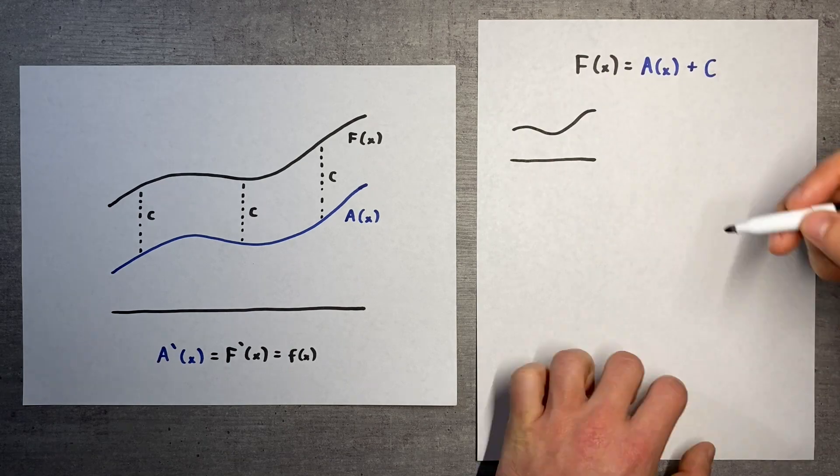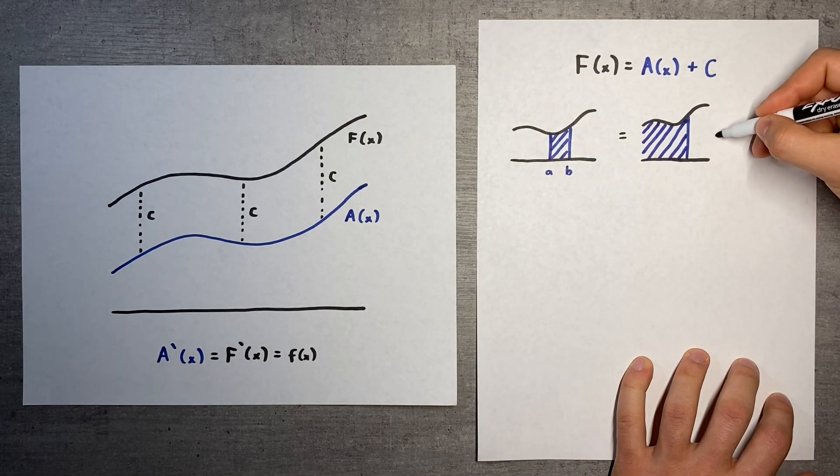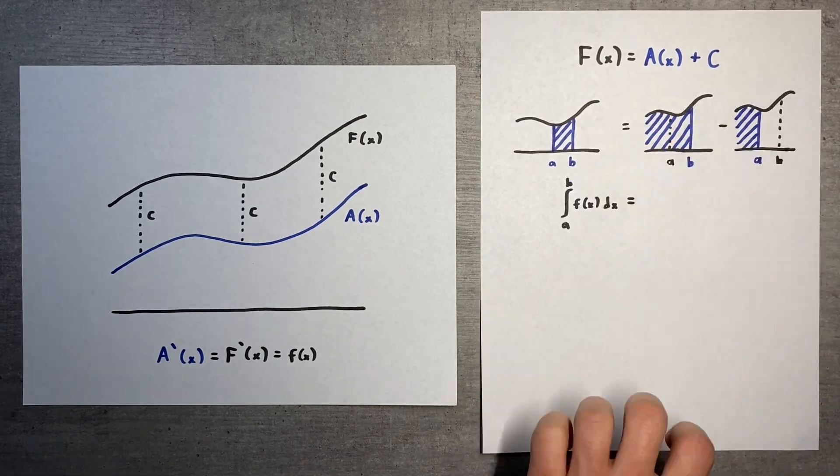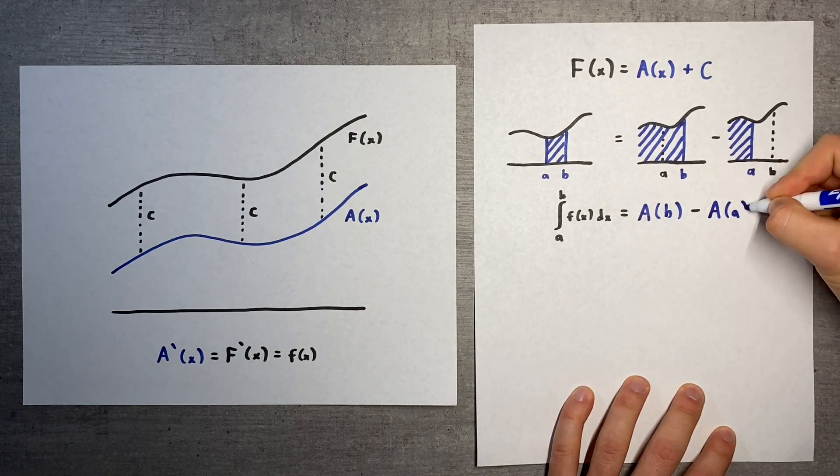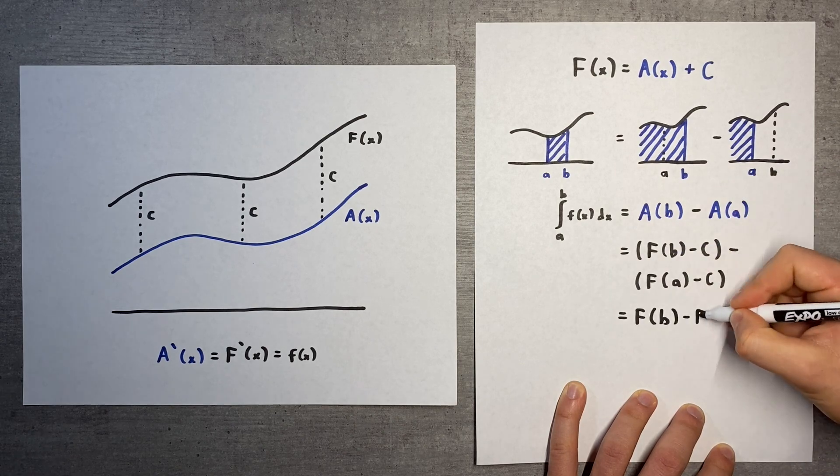Even if we can't figure out any values of A using our antiderivative, we can still use it to find the area underneath f on some interval. This area is equal to the change in the area function, A of b minus A of a. And when we calculate this in terms of big F, we see that the constant disappears.